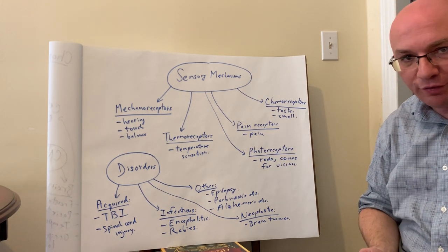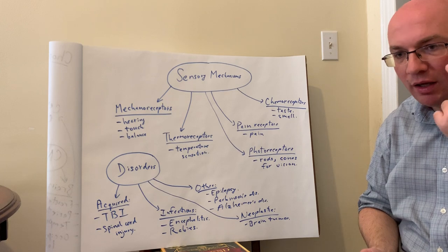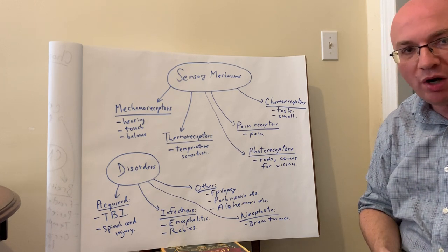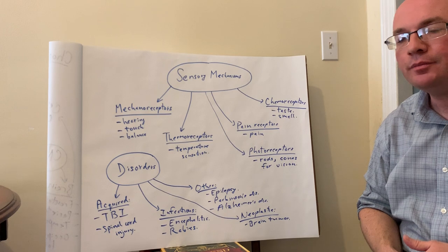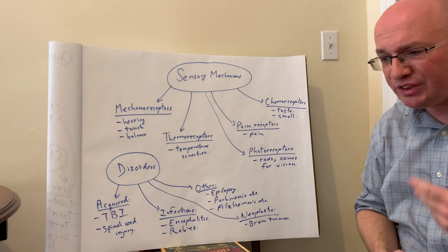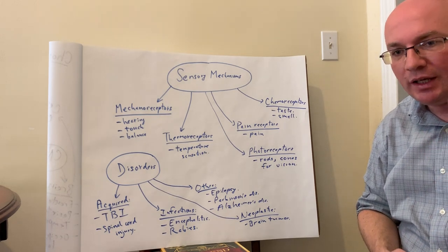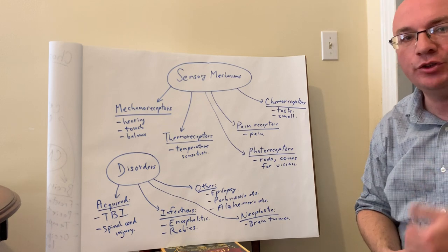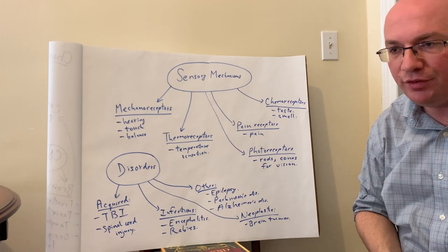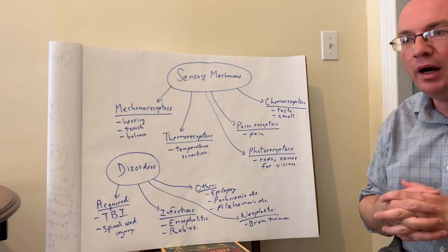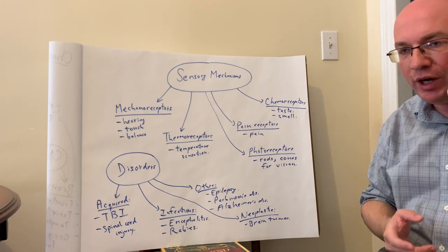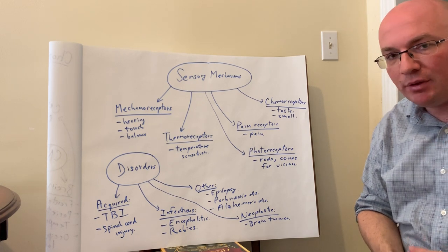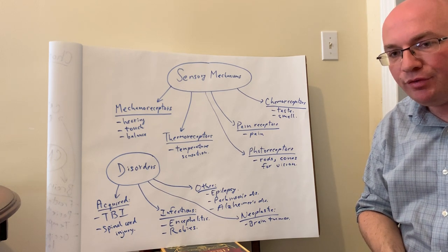Photoreceptors deal with vision and are found in the retina. There are two types: rods and cones. Rods are the most abundant and deal with contrast and black-and-white vision. Cones help us interpret color vision information. Together they're combined in the retina to transmit information to the occipital lobe, where the primary visual cortex is located to process eyesight and vision information.